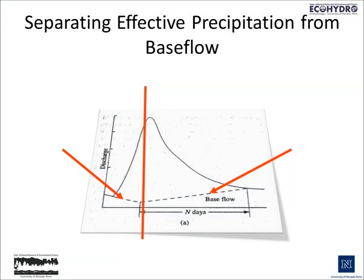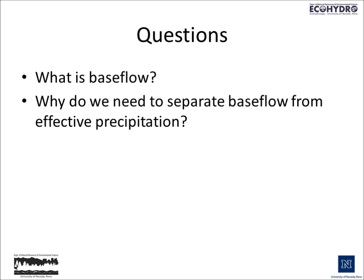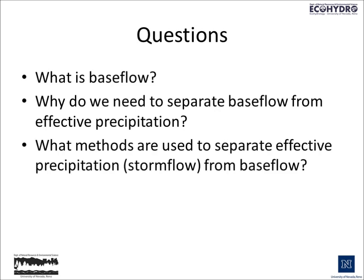One of the challenges of working with hydrographs has to do with separating the effects of precipitation on stream flow from base flow. We do this so that we can get a sense of how a watershed might respond when we put precipitation in and look at the effects on discharge as it comes out. So let's consider a few questions: What is base flow? Why do we need to separate base flow from effective precipitation? And what methods are commonly used to separate effective precipitation and storm flow from base flow?